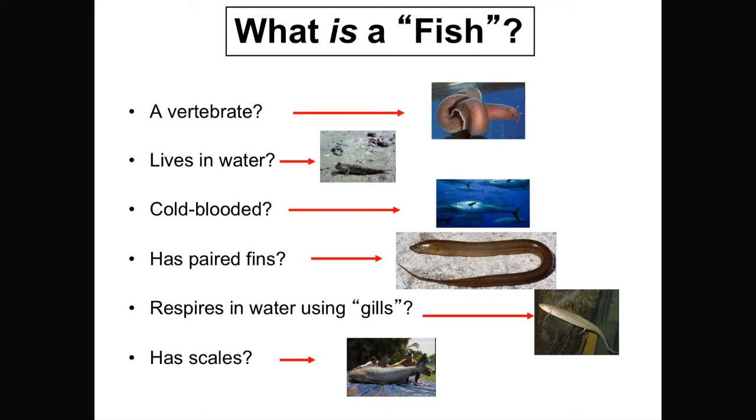This is a swamp eel that has actually no paired fins at all. No fins. It's lost all the fins. This is a lungfish, which actually respires air. It can live for literally years out of water respiring air because it has a lung. Some of them have gills, but this one in particular doesn't.